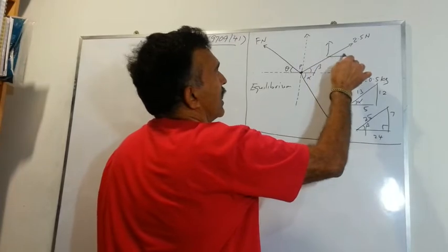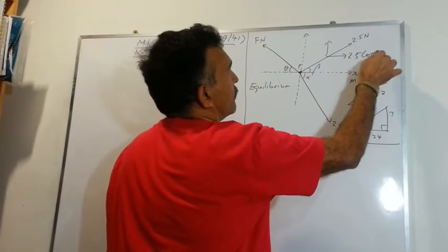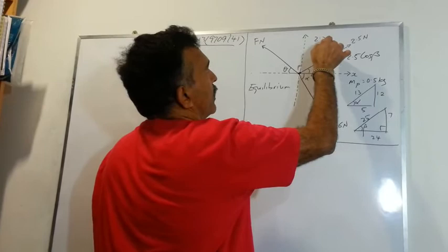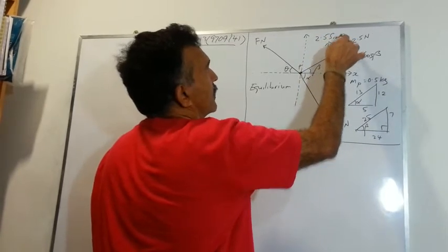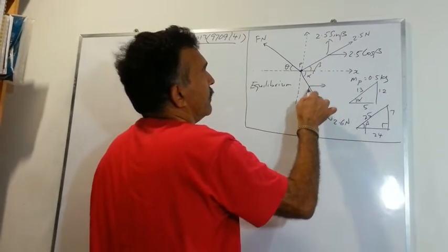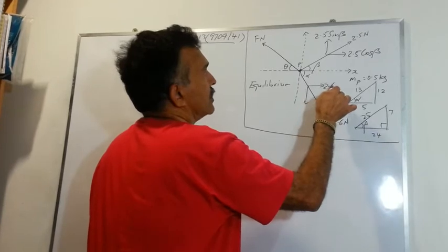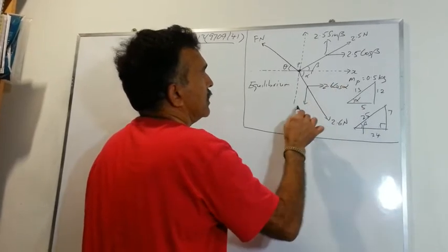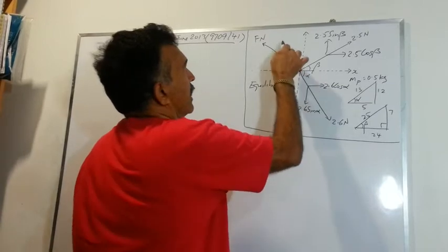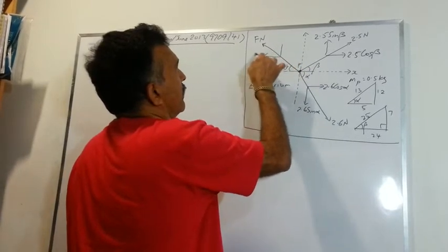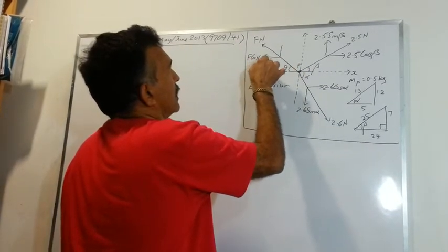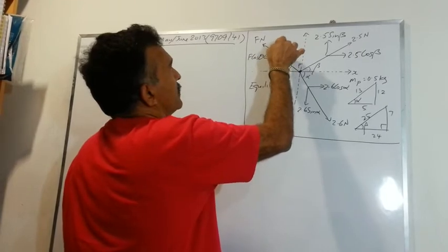So I have my 2.5 cos beta and 2.5 sin beta, and here I have 2.6 cos alpha, 2.6 sin alpha, and here I have F cos theta and F sin theta.